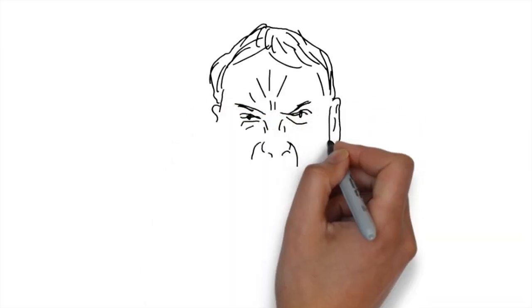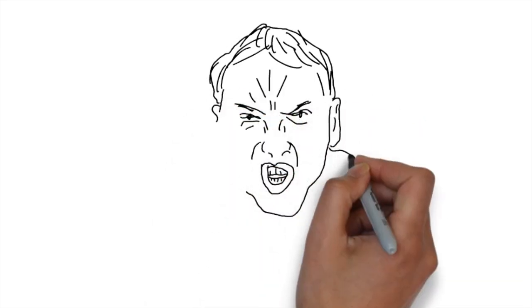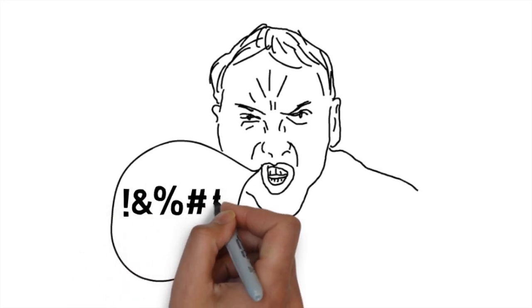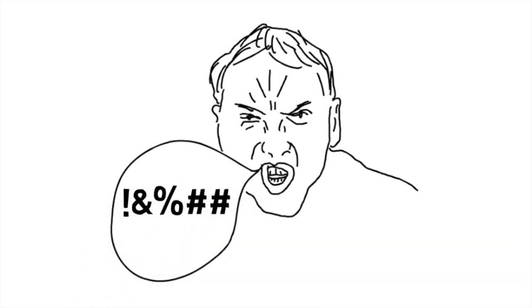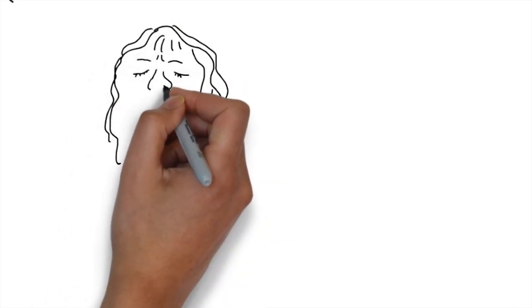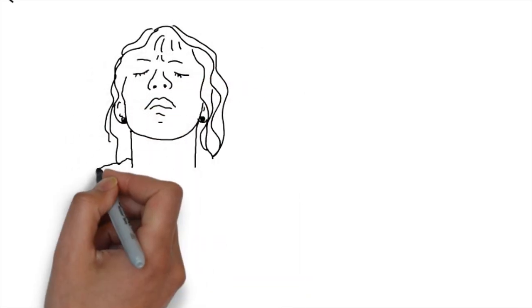Next, their denial becomes anger. Once they realize that they have the illness, they lash out at others because they feel victimized by the disease. Then they start bargaining with God or whoever will listen.